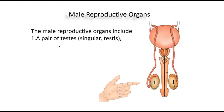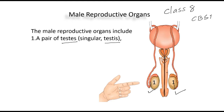The male reproductive organ includes, number one, a pair of testes. Look at the word: T-E-S-T-E-S; the singular is T-E-S-T-I-S. We will discuss only those parts which are very important as far as your Class 8 CBSE syllabus is concerned. There are many such organs which are beyond the scope of your syllabus. These are called testes.